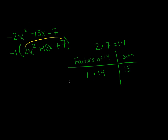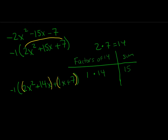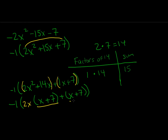We rewrite the expression as negative 1 times (2x squared plus 14x plus 1x plus 7), then group the terms. For the first group, 2x squared plus 14x, the greatest common factor is 2x, leaving us with x plus 7. For the second group, 1x plus 7, there's nothing to factor out, so we leave it as is. We see the common factor x plus 7, and pulling that out leaves us with 2x plus 1. So the final factorization is negative 1 times (x plus 7)(2x plus 1).